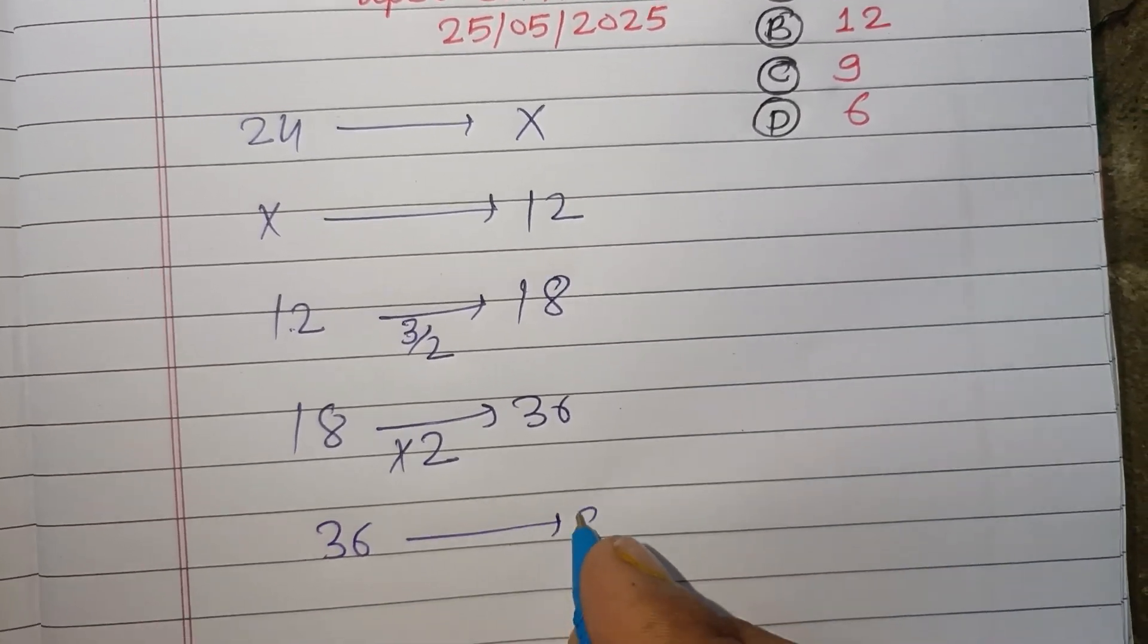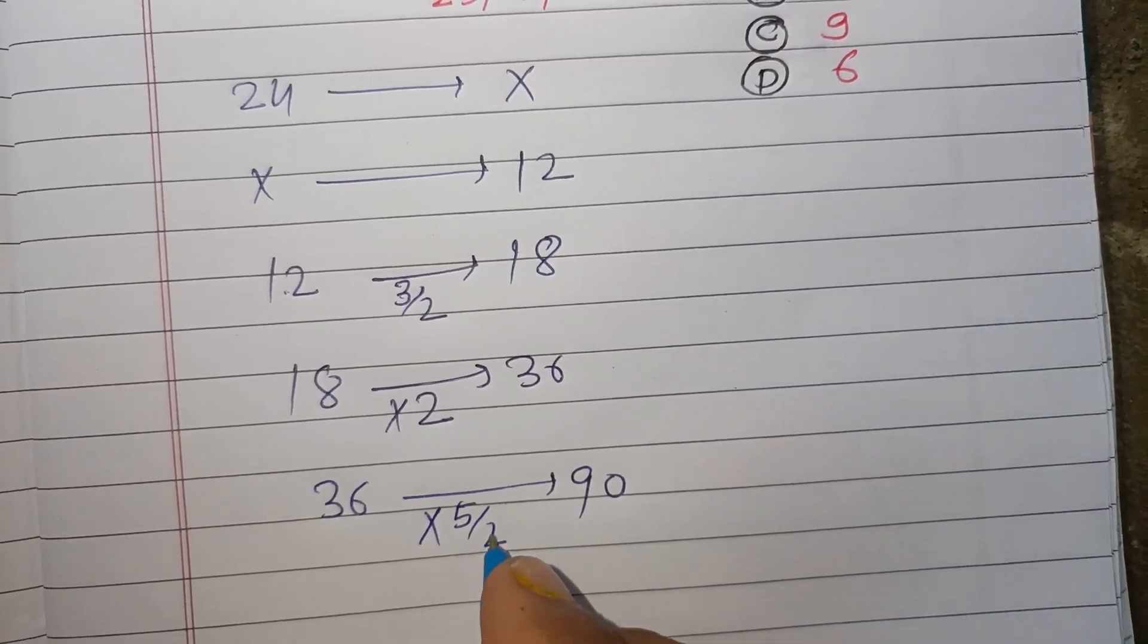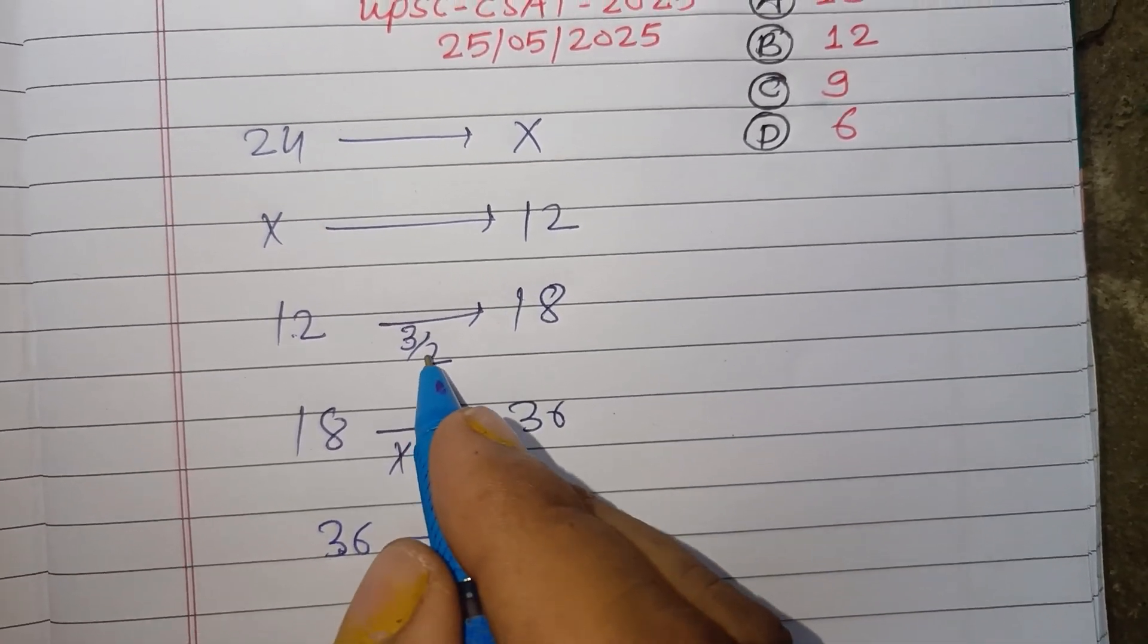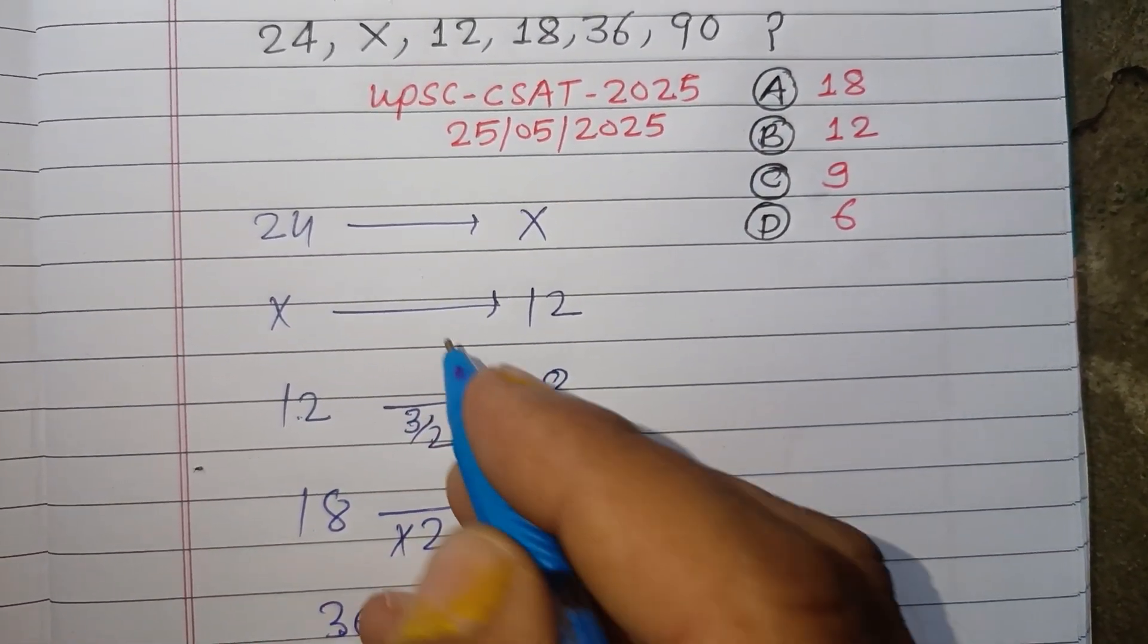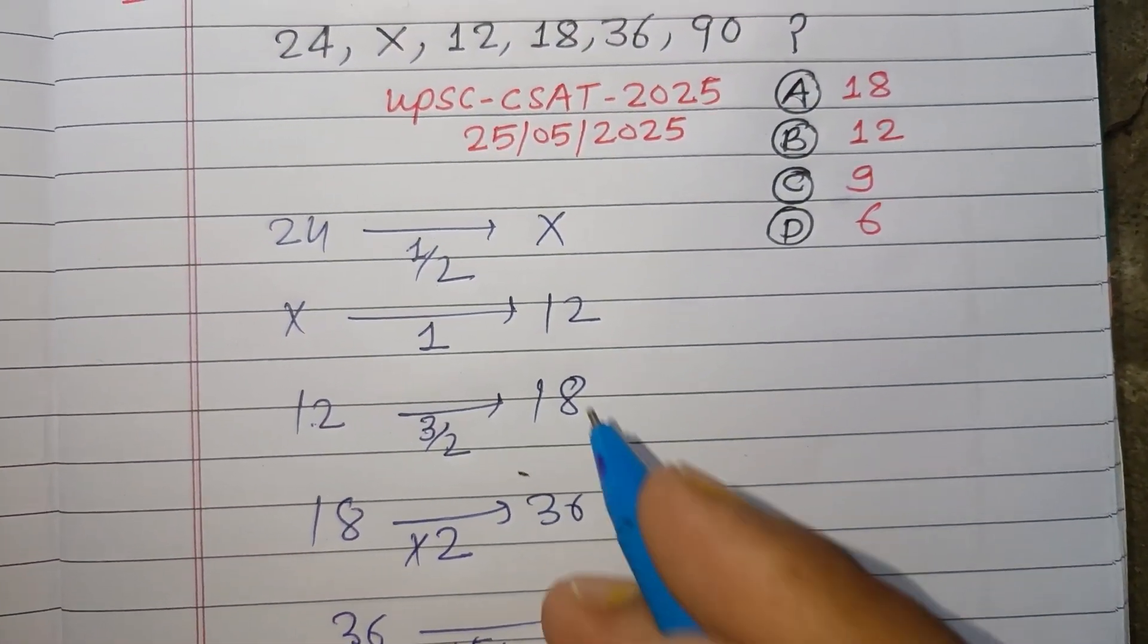to 90. So if you multiply 36 by 5/2, you get 90. So this is 5/2, this is 3/2, then this is 1, and this is 1/2.